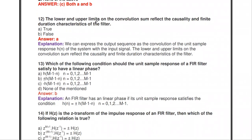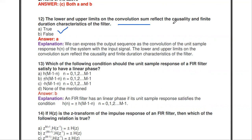The lower and upper limits of the convolution sum (n = 0 to infinity) reflect the causality and the finite duration characteristics of the filter — this is true.